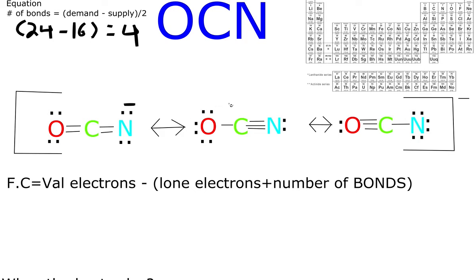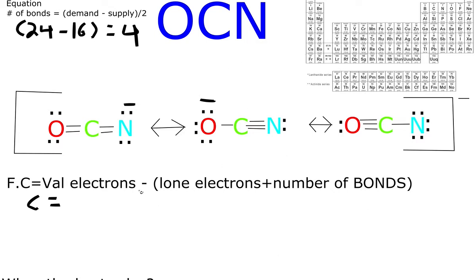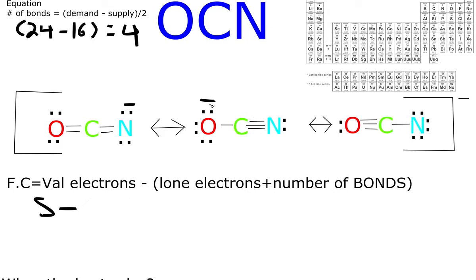Let's look at the second molecule. Oxygen is in group 16, so 6 valence, minus 6 lone electrons, plus 1 for the single bond — 6 minus 7 is negative 1. So this oxygen has a negative charge. Carbon has 4 valence, no lone electrons, forms a single and a triple bond for 4 total — 4 minus 4 is 0. Nitrogen has 5 valence, minus 2 lone electrons, plus 3 for the triple bond — 5 minus 5 is 0. So oxygen holds the charge in this structure.